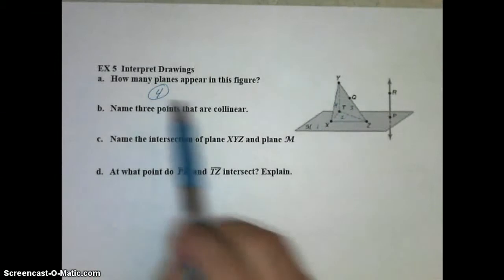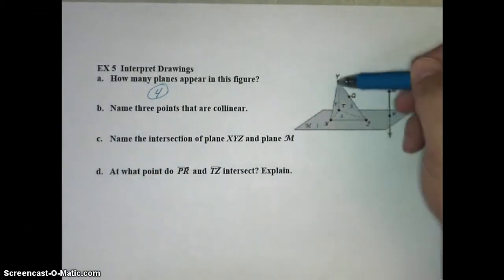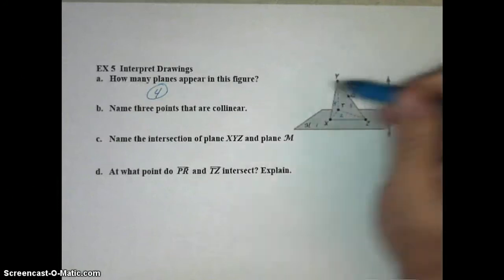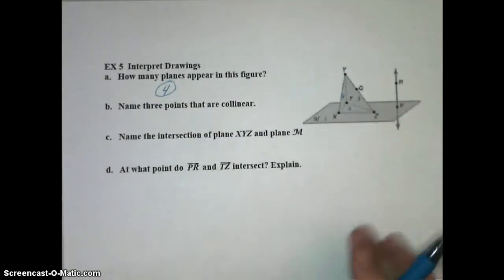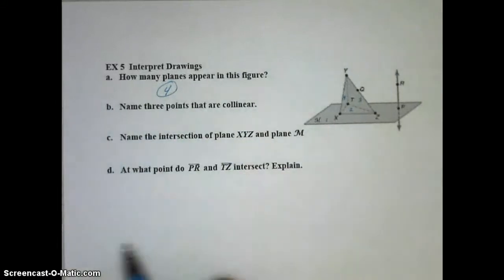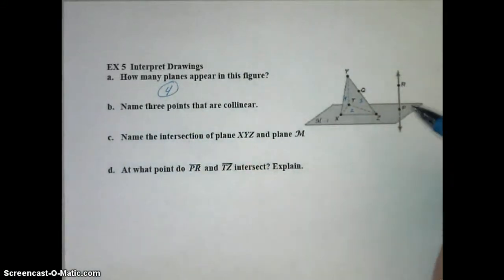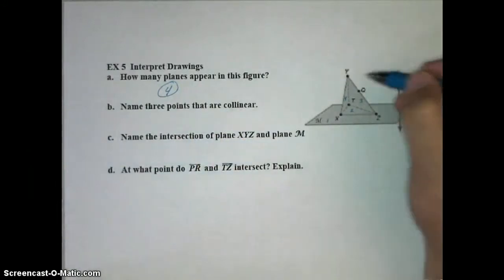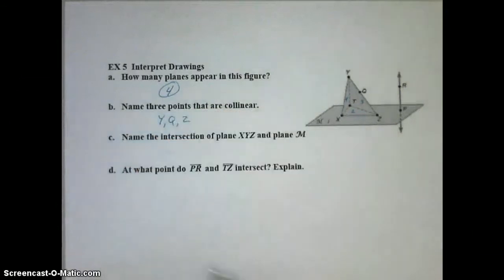I get that there are four planes. We have plane M, then the front triangle is another plane, the one on the left is another plane, and the one on the right is another plane. So that's a total of four. So many points are not collinear that we could name. Well, we just have to name three. That means we're going to name three points that are on the same line. The only three we have that are collinear are Y, Q, and Z.